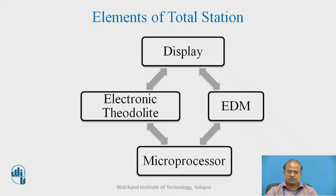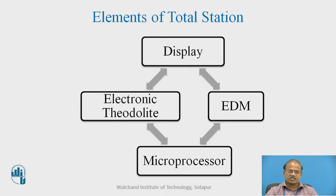In addition to this, in some instruments there are reflectorless instruments also. What that means is when we transmit the wave it may strike any object that is targeted by us, and from there it will get reflected and be received back by the instrument, which is capable of sensing the distance from the instrument station to the object.